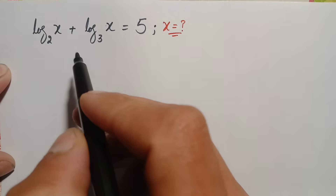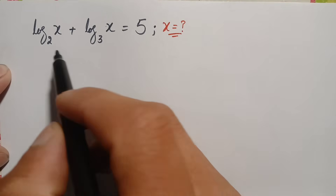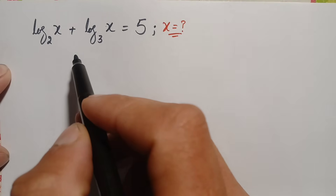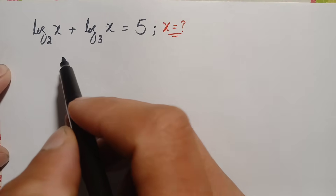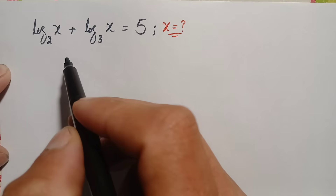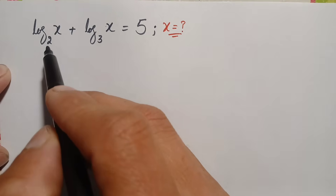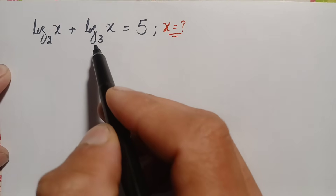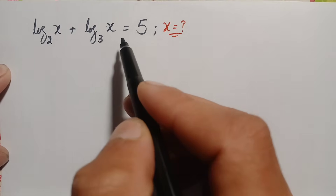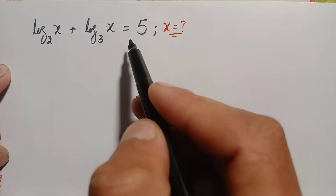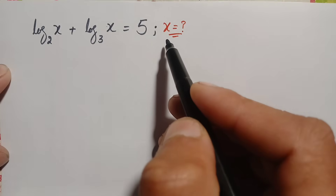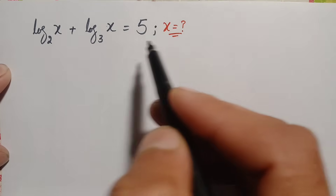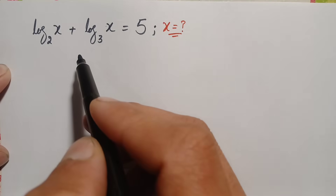Hello everyone, you are welcome. How to solve this beautiful logarithm problem with different bases: log of x with base 2 plus log of x with base 3 is equal to 5. We will try to find out the value of x.